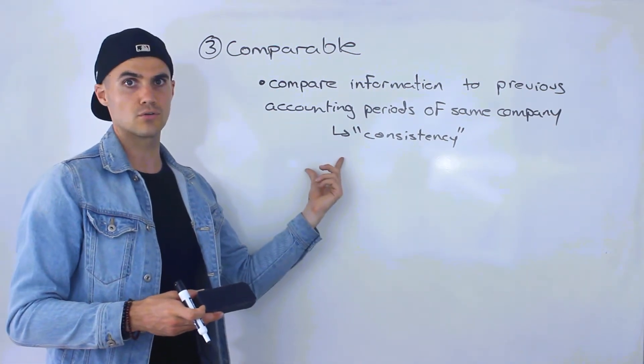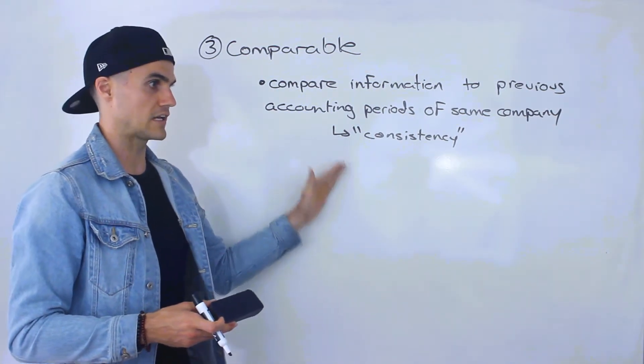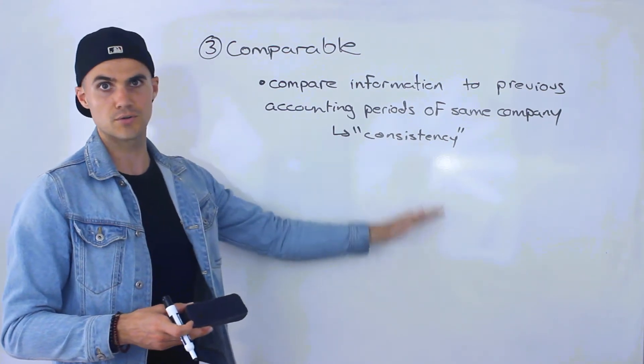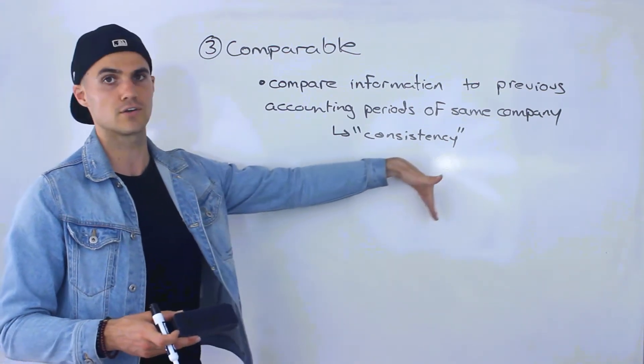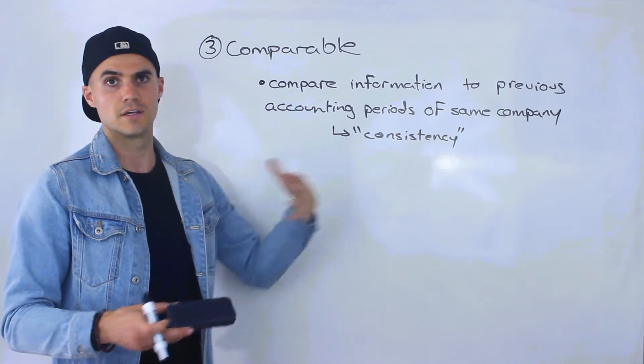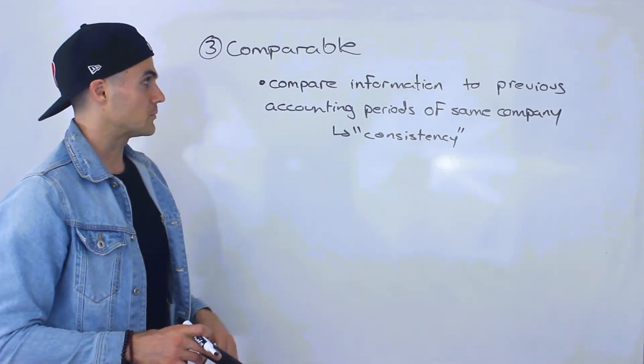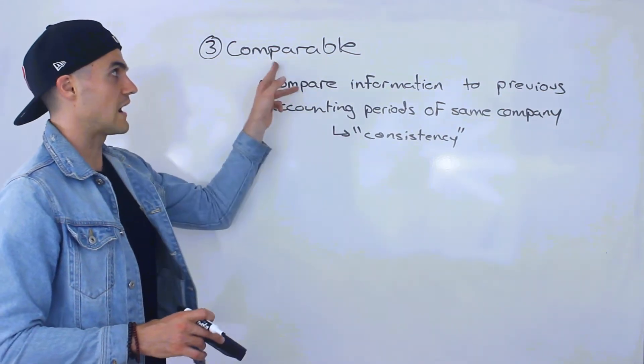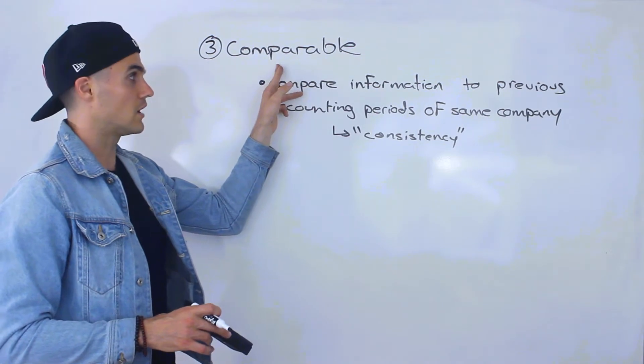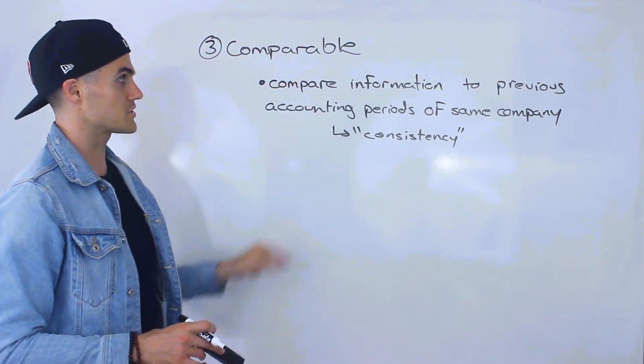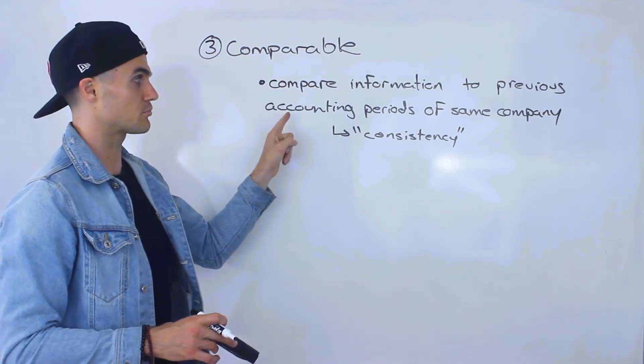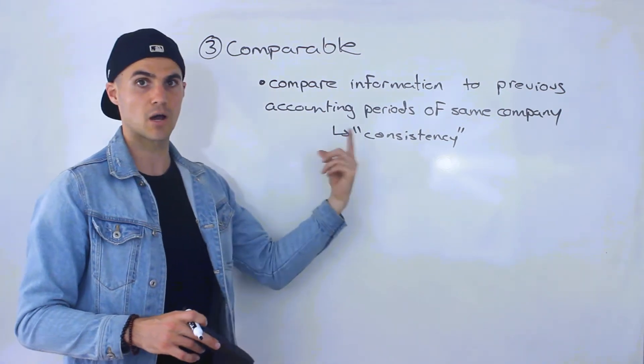Like if, let's say five years ago, you had your information in Canadian dollars and then this year you have it in US dollars, maybe next year you have it in euros. It's just going to get a little bit confusing and it starts to violate that principle of information being comparable. So you've got to be able to compare information to previous accounting periods of the same company.